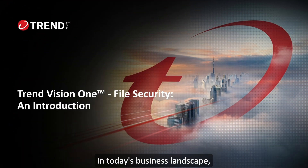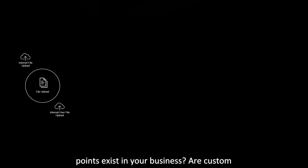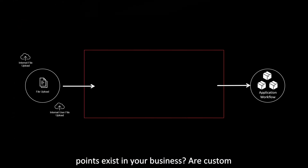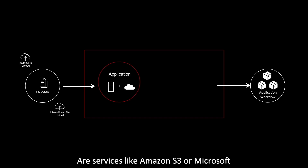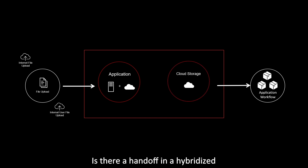In today's business landscape, organizations must identify all data entry points as potential origins for security issues. Consider the following: What file ingress points exist in your business? Are custom applications used for file intake or downstream workflows? Are services like Amazon S3 or Microsoft Azure Storage Blobs performing short or long-term storage of those files? Is there a handoff in a hybridized environment requiring file integrity validation?